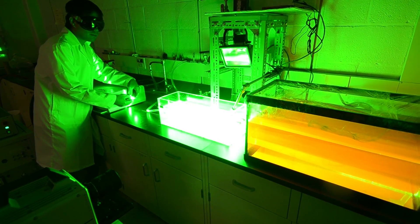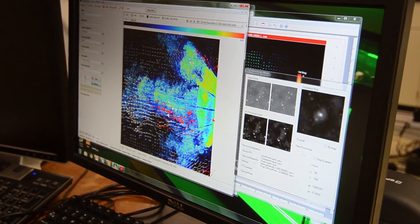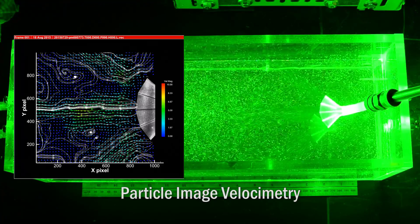By shining a sheet laser at the flow and tracking particle movement using high-speed video, we can map the path of the flow and measure its velocities.